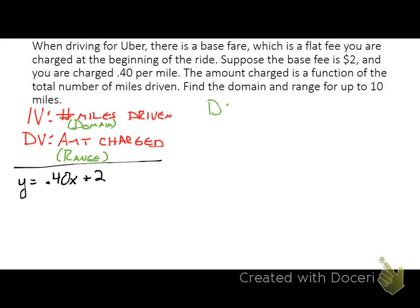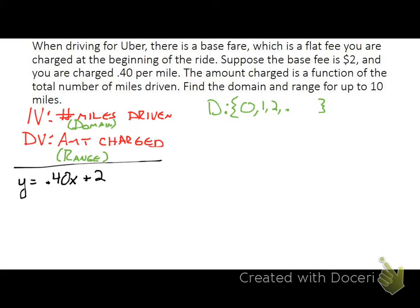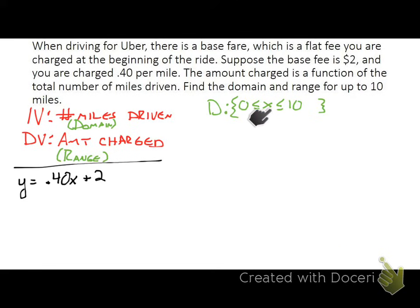For our domain, those are all the possible miles driven. It could start at 0 and go all the way up to 10,000 miles, as stated in the problem. When we write the domain as a set of whole numbers, it doesn't leave room for values like 1.5 or 1.75 miles. This function is continuous, so we write the domain using inequality notation: 0 ≤ x ≤ 10,000. This implies x can take any value — including fractions and decimals — between 0 and 10,000.